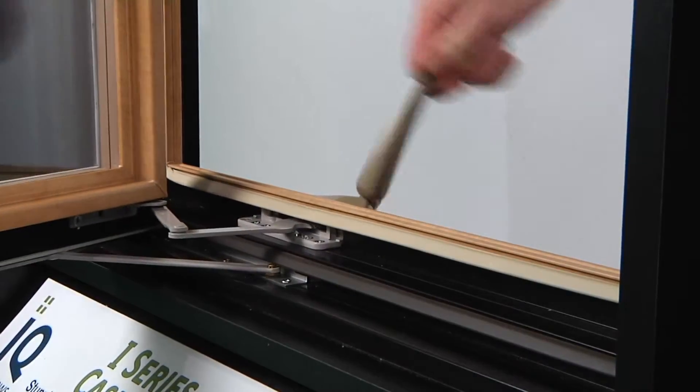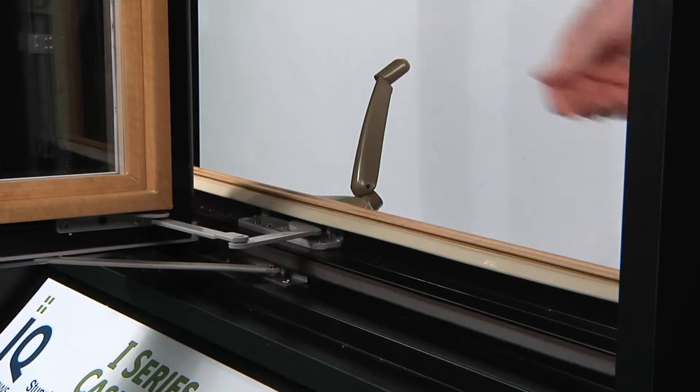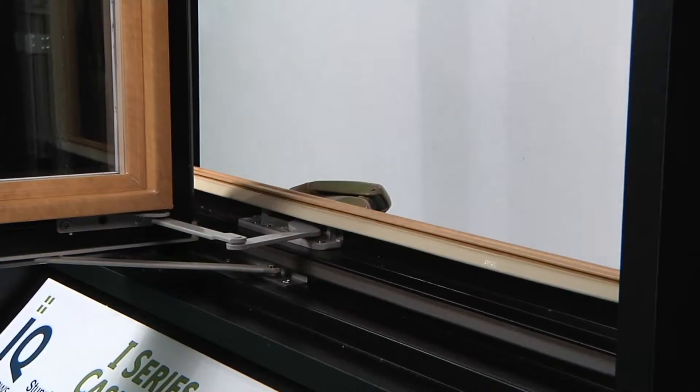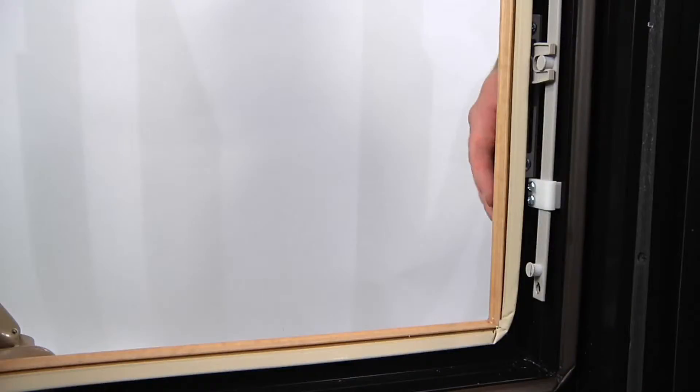On the i-Series casement windows, the ultra-low-profile Maxim hardware system by Truth Hardware is used as a complete system where the hinges, operating crank handles, and single-action multipoint locking system were developed to work together in concert to provide years of smooth and trouble-free operation.